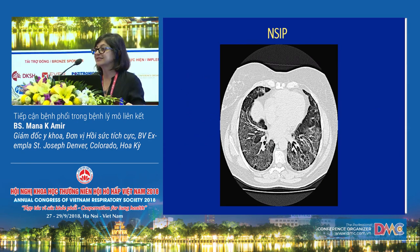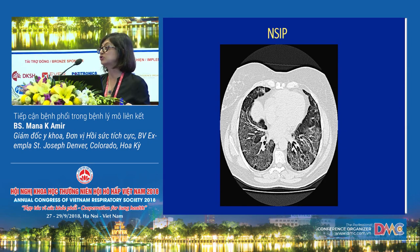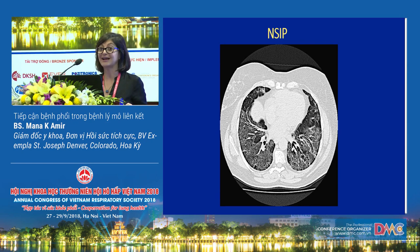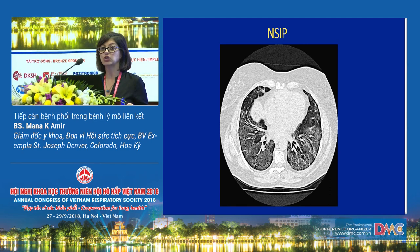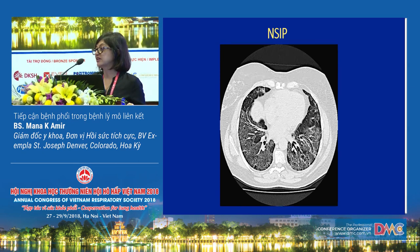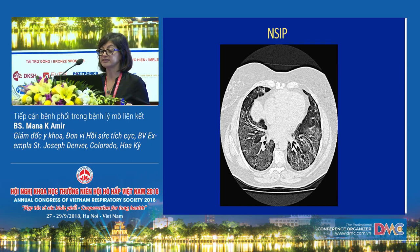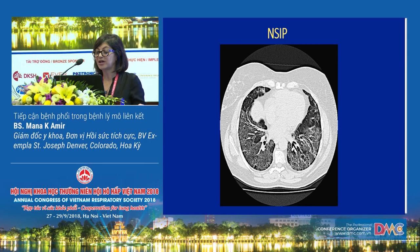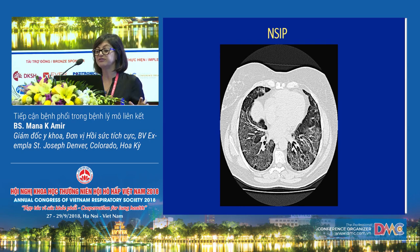This is a classic CT scan for nonspecific interstitial pneumonitis. Here you can see a significant amount of ground glass distributed over multiple lobes of the lung from upper to lower, and some mild associated traction bronchiectasis. You do not see a whole lot of fibrosis here — this is more of an inflammatory condition with limited fibrosis.